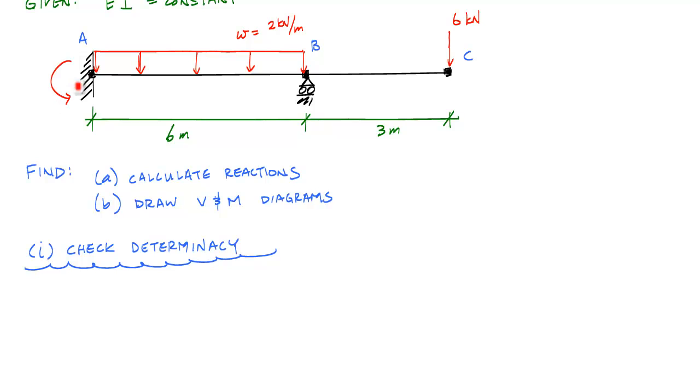Let me go ahead and draw the reactions here from the support conditions. I have a fixed support at A, so I've got a moment at A, a vertical reaction, and a horizontal reaction. The roller support at B only has a vertical. When I look at the number of reactions I have, I've got four reactions. The number of equilibrium equations I have to analyze this beam is 3. Since my number of reactions is greater than my number of equilibrium equations, I am statically indeterminate.